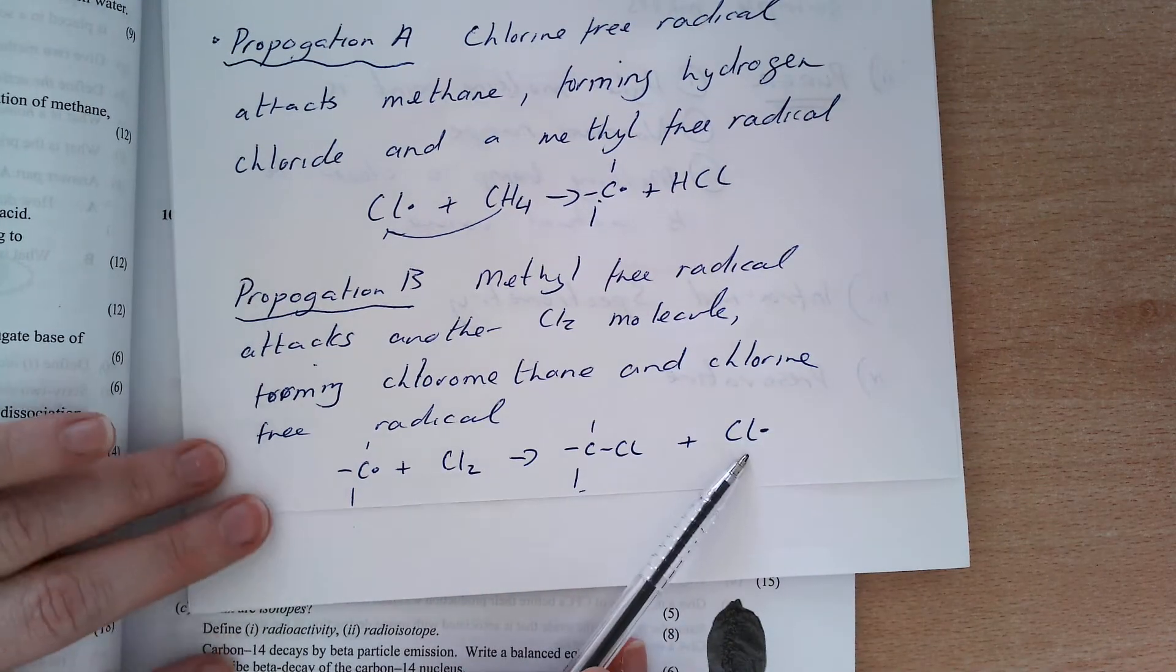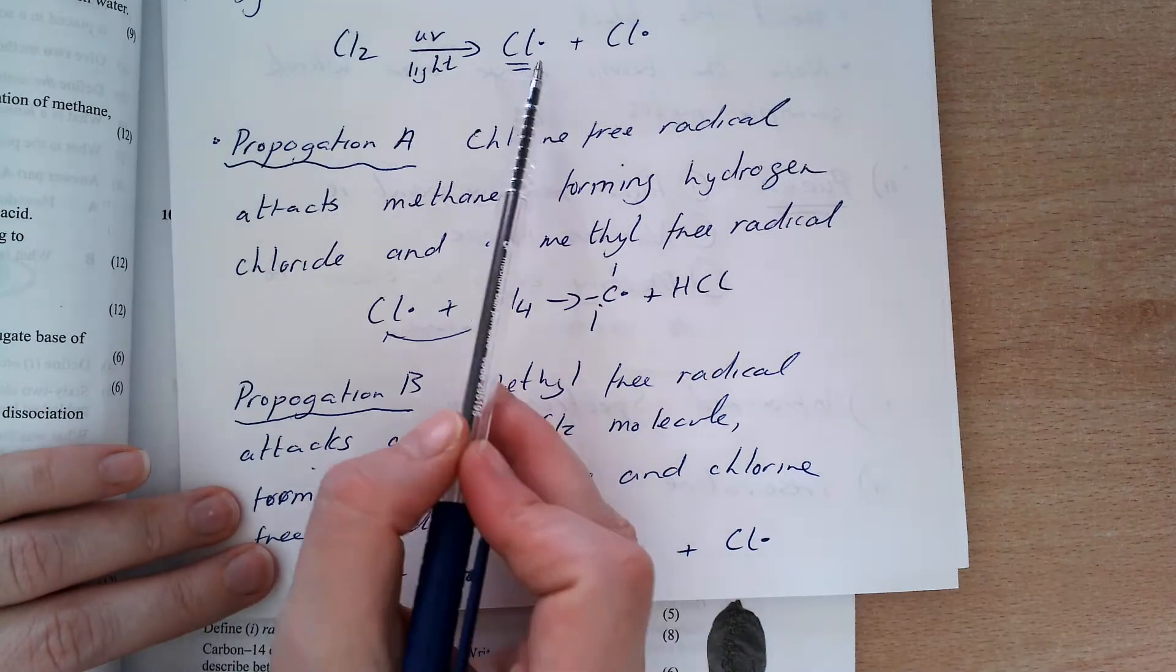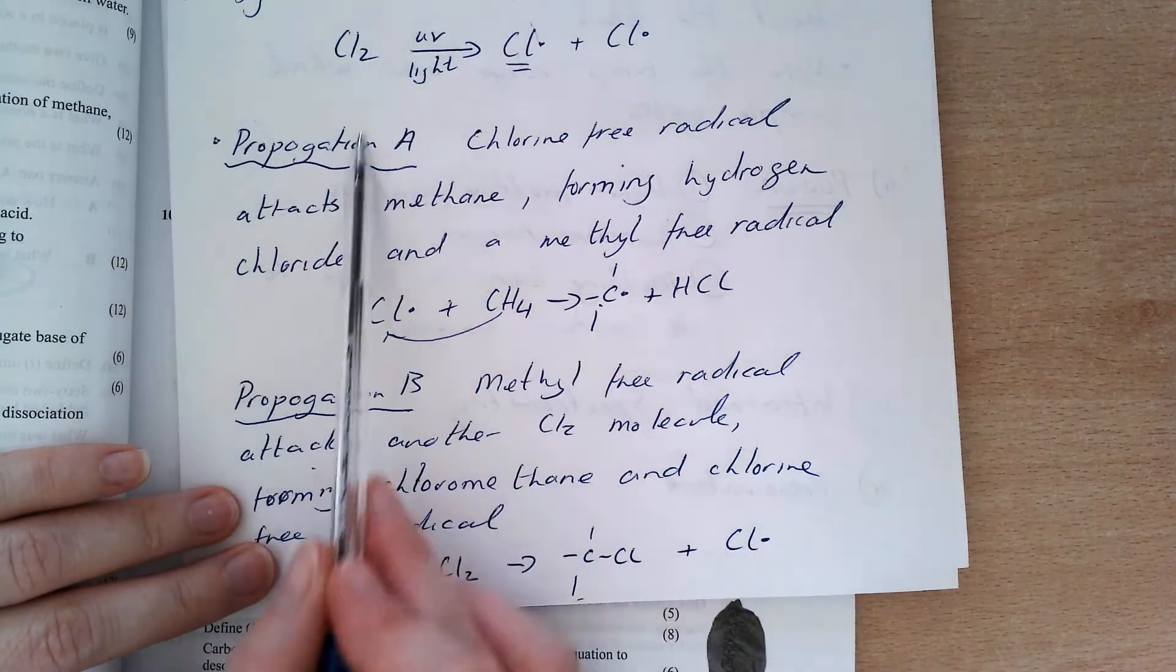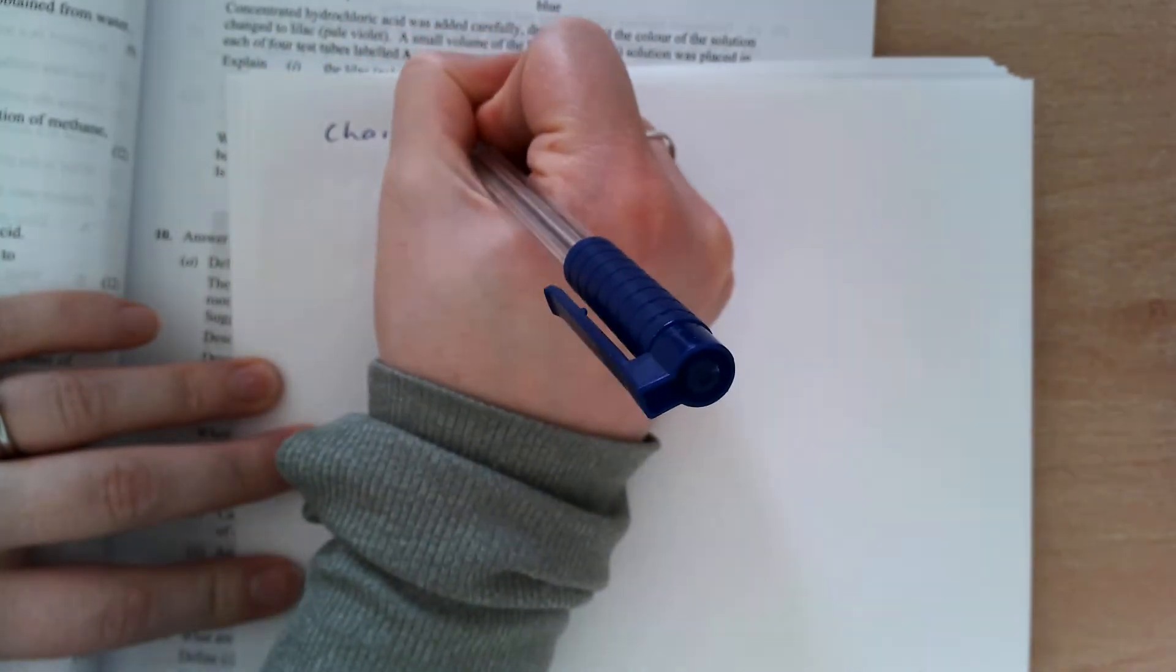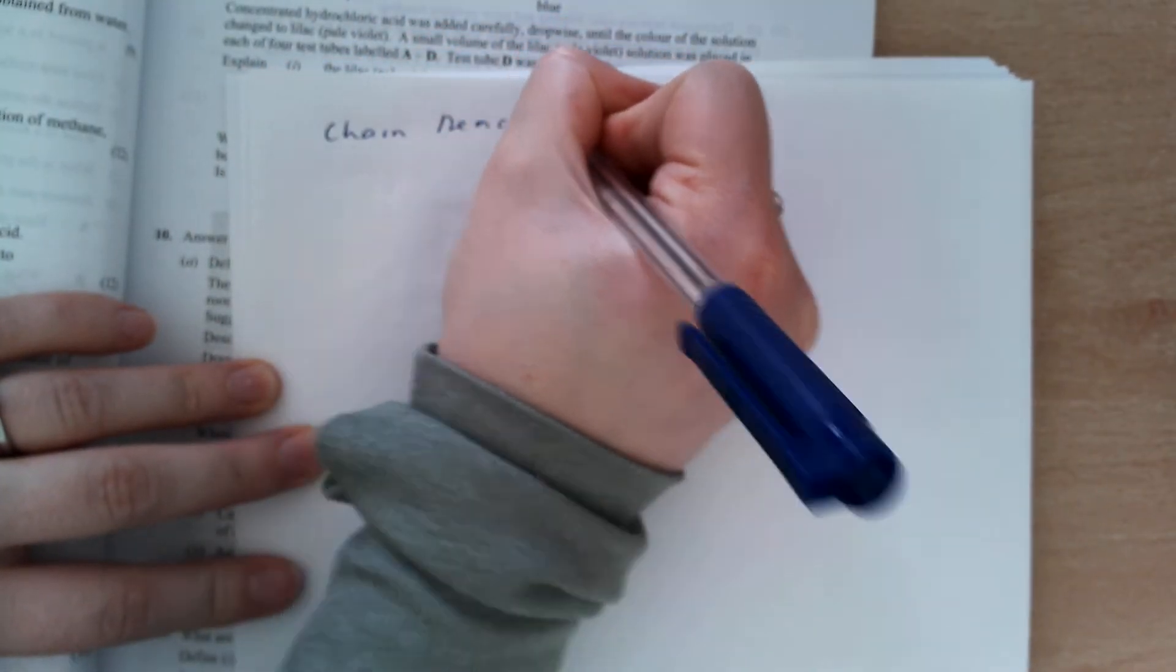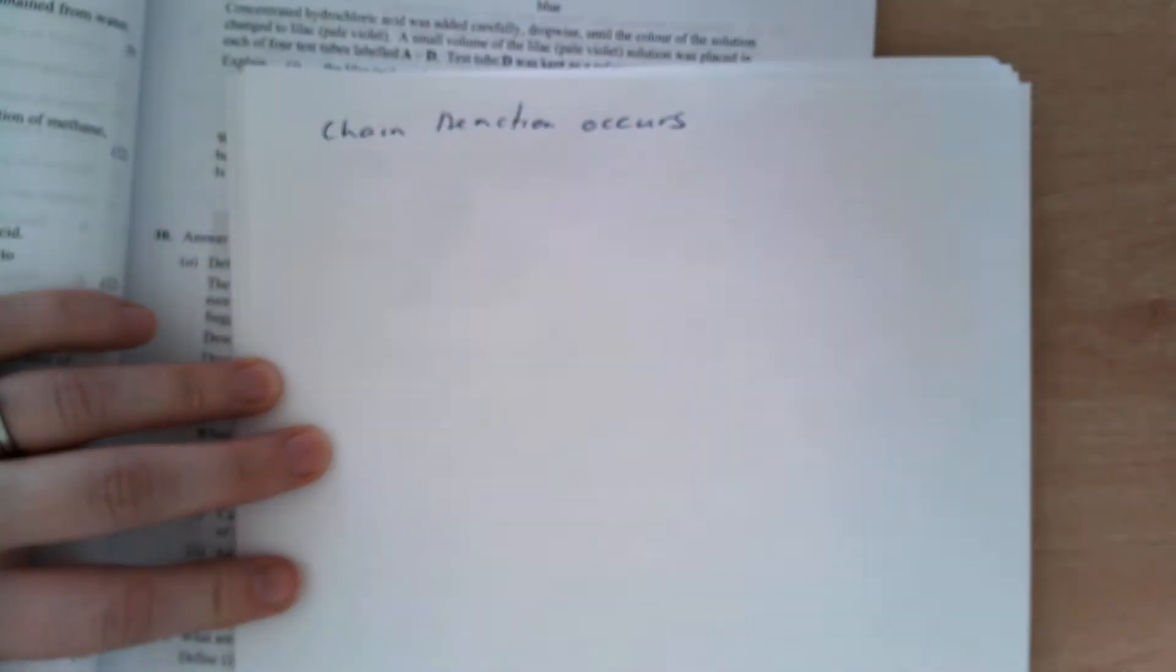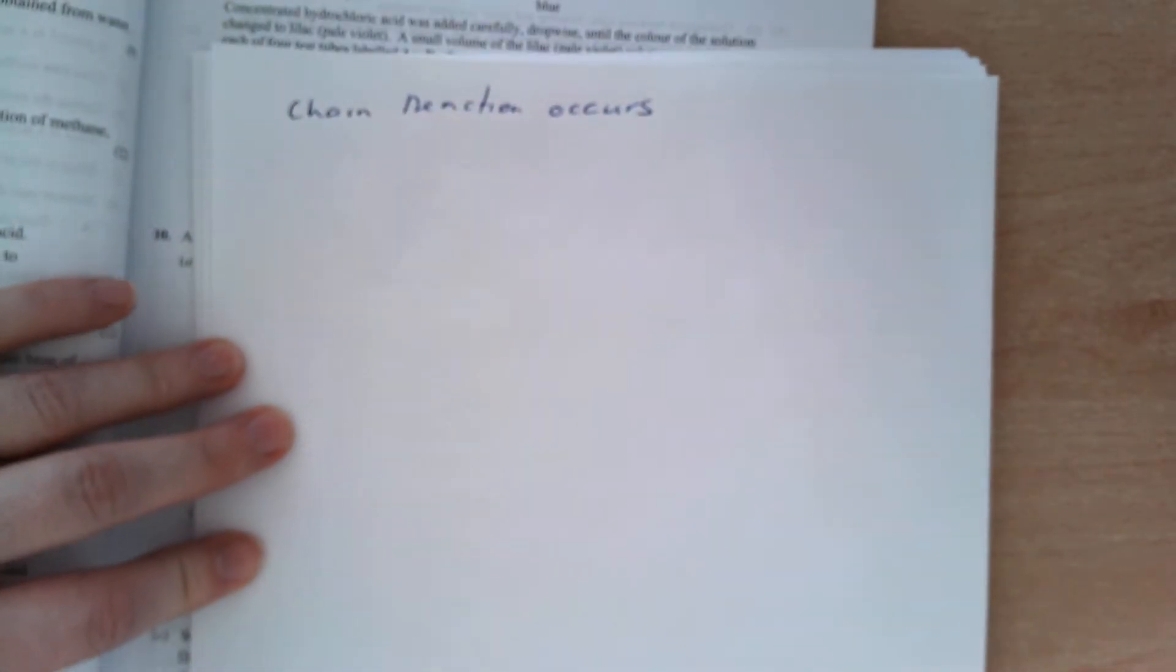Because I have this free radical, this step can all happen again. So we have to state that a chain reaction occurs. And for as long as Cl2 is present, you're going to end up with the chain reaction occurring.